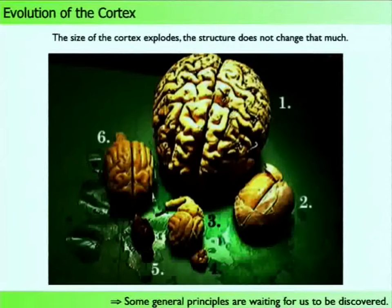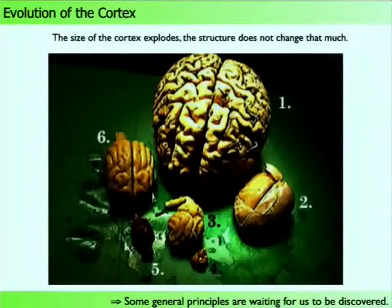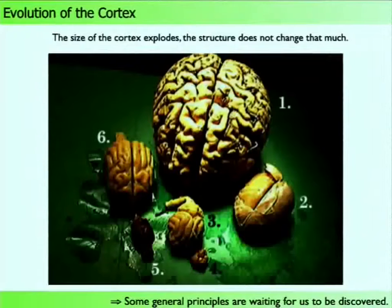This parallel architecture produces amazing capabilities — for example, language and vision, which we are using right now. The conclusion that general principles are to be discovered is very good news. If understanding the brain required an answer as complex as the brain itself, with highly specialized circuits for every area, it would be as long as the brain's own complex structure — and we would not have understood anything.